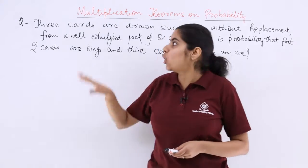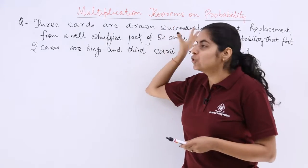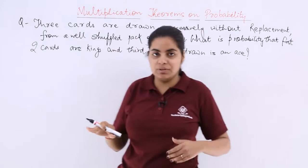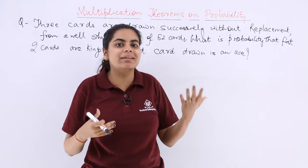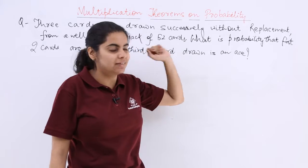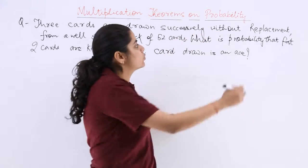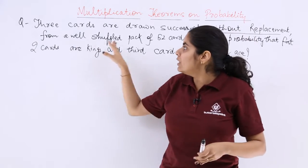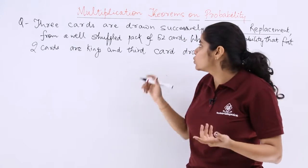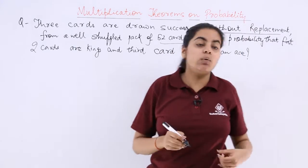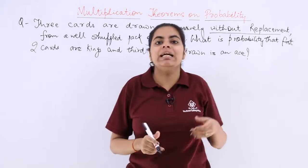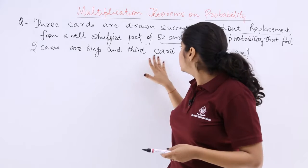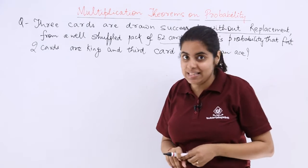The next question is based on the multiplication theorem of probability. It says 3 cards are drawn successively — the word 'successively' tells you this falls under that category — without replacement. This is important: successively without replacement from a well-shuffled pack of 52 cards. The question asks for the probability that the first 2 cards are kings and the third card drawn is an ace.